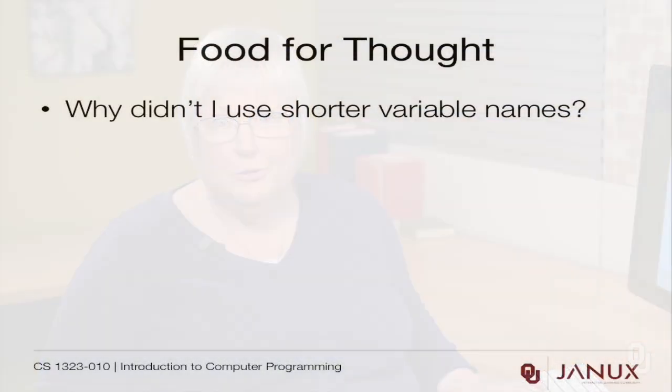Here's some food for thought. Why didn't I use shorter variable names? Beginning students often want to call everything x, y, and z, thinking they're saving time because those are quick to type. But the big time cost in programming isn't the typing — it's finding mistakes in your program. And it's a lot harder to find mistakes if you don't know what the variables mean.